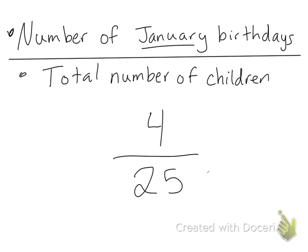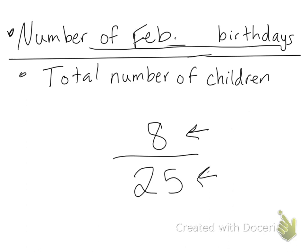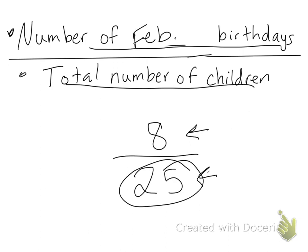If I wanted to do February birthdays, let's say we have eight people with February birthdays. Then my fraction would look like eight over 25. The top number tells me how many people have that birthday, and the bottom number is the total number of children. So no matter what month I use, the bottom number will stay the same — it's only the number on top that will change.